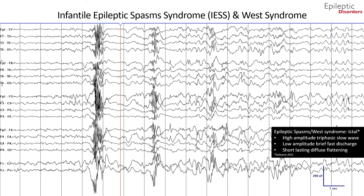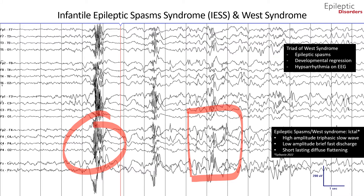This bipolar montage EEG consists of a patient with epileptic spasms noted best in the 5th and 11th second of the page, as outlined by the red circle and red box. Note, on the 11th second of the page, there is a high amplitude slow wave with low amplitude, brief fast discharge, and brief suppression afterwards. This EEG pattern is of a patient who is 2 months old with epileptic spasms, developmental regression, and hypsarrhythmia. Having met all three features, this patient was subsequently diagnosed with West syndrome.